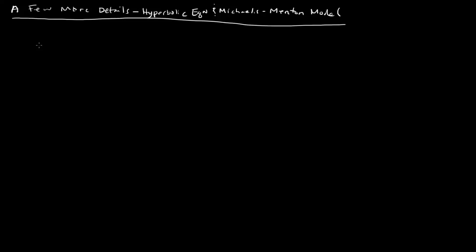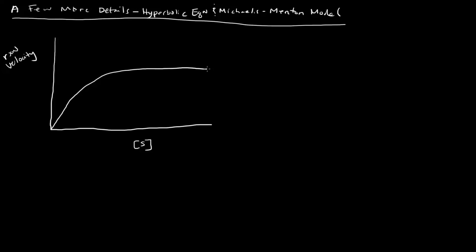In the last video we talked about the hyperbolic graph, which looked a little something like this. We had reaction velocity on the y-axis and substrate concentration on the x-axis. The reaction velocity sort of leveled off after a certain point as far as substrate concentration goes — increasing it beyond a certain point doesn't further increase the velocity.